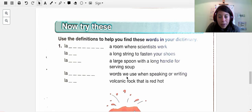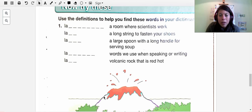Then you have two more. Words we use when speaking or writing. There you go. Look at all the letters it has. Volcanic rock that is red hot, like this one. That's a really short word.